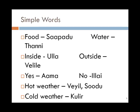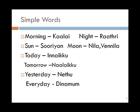Hot weather can be referred to as 'veil', or 'sudu' for hot temperature. Cold weather is referred to as 'kulir'. More words: morning is 'kalai', night is 'ratri', sun is 'suryan', moon is 'nila' or 'vanilla'. Today is 'innika', tomorrow is 'nalika', yesterday is 'net', and every day is 'dinamum' or 'dinam'.